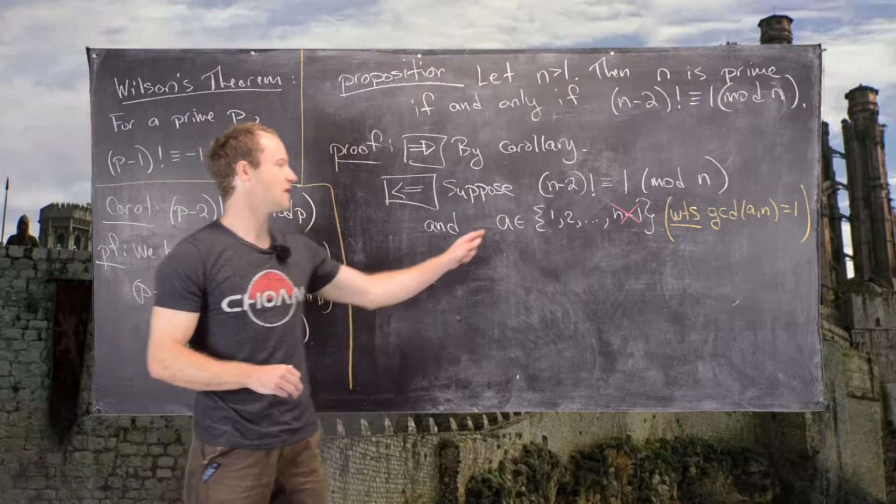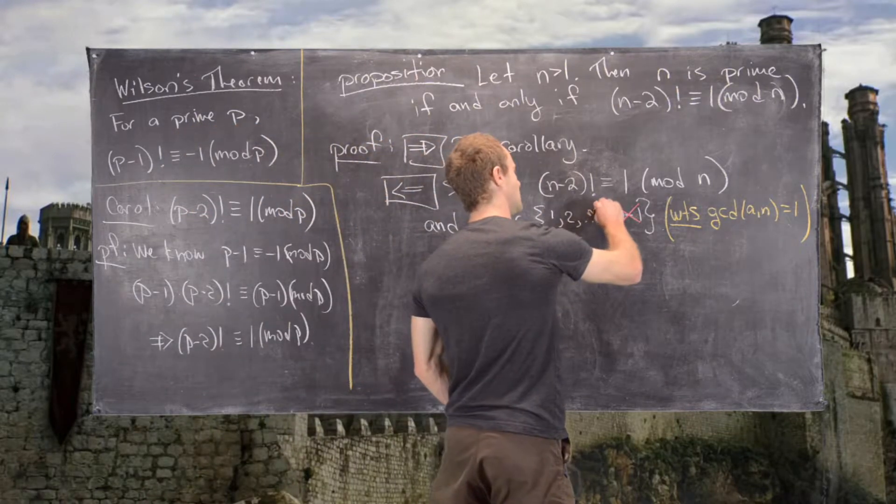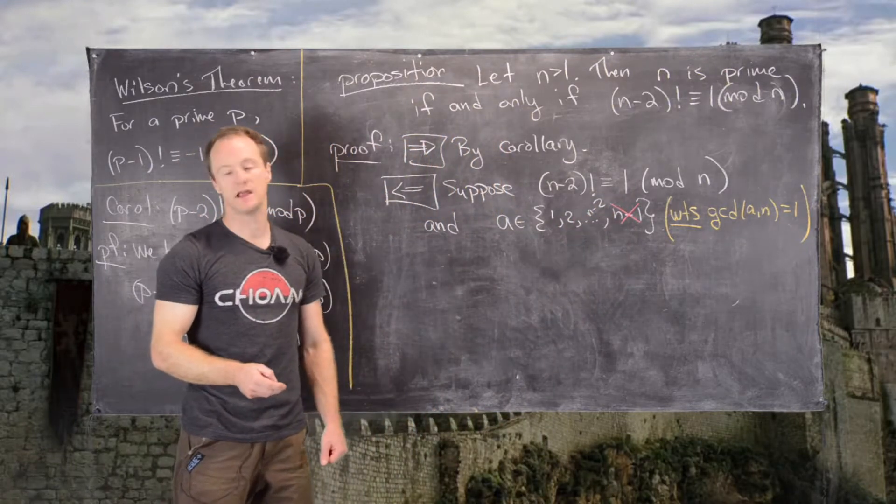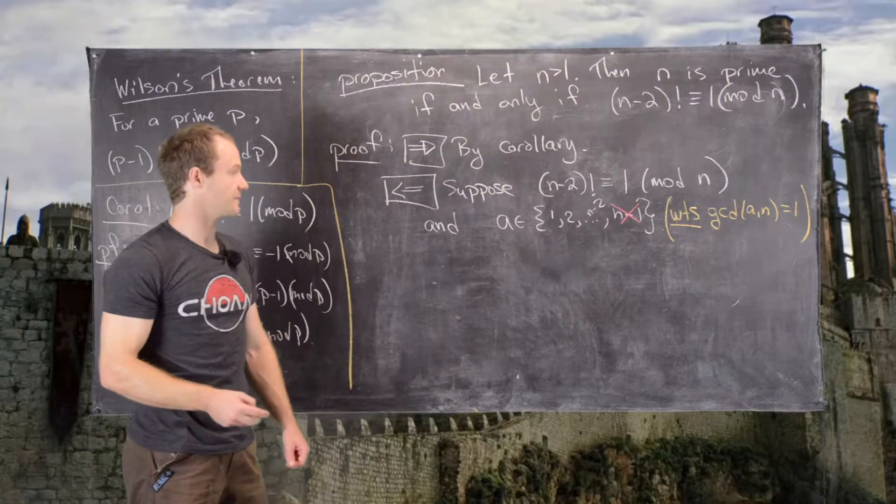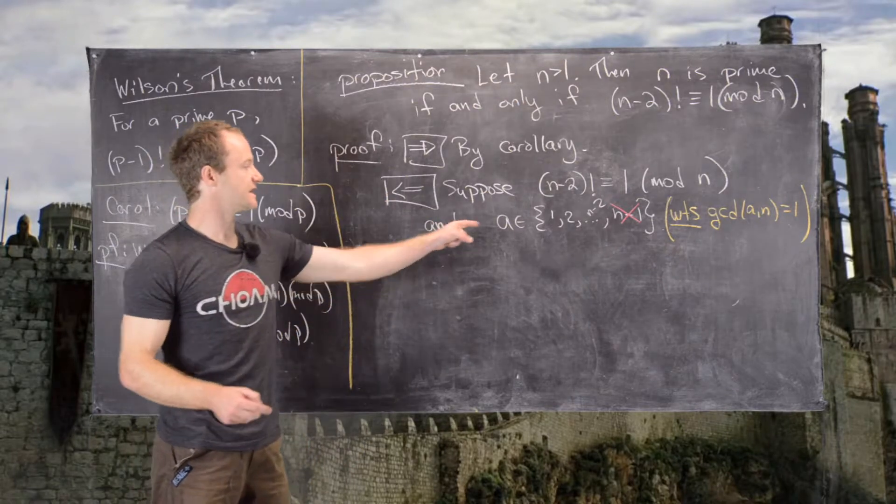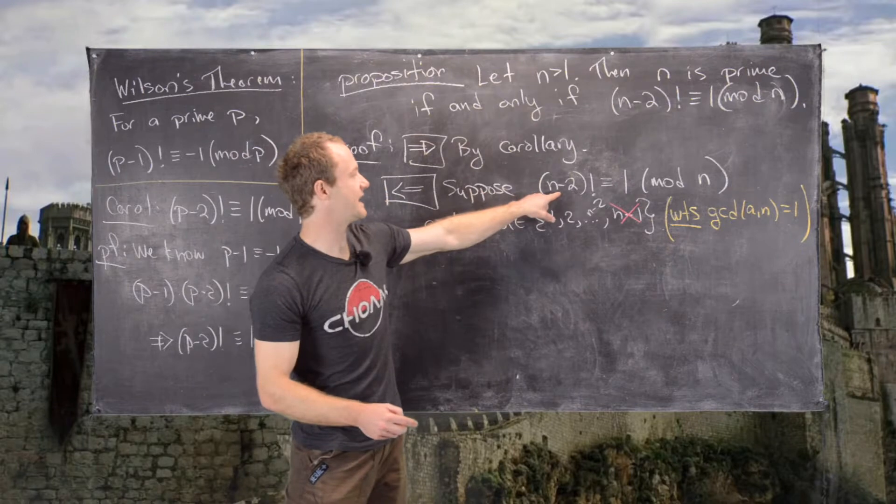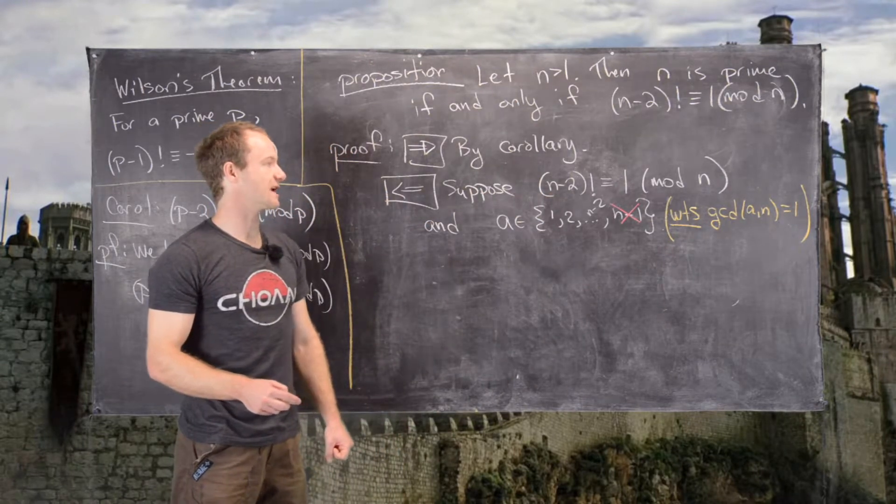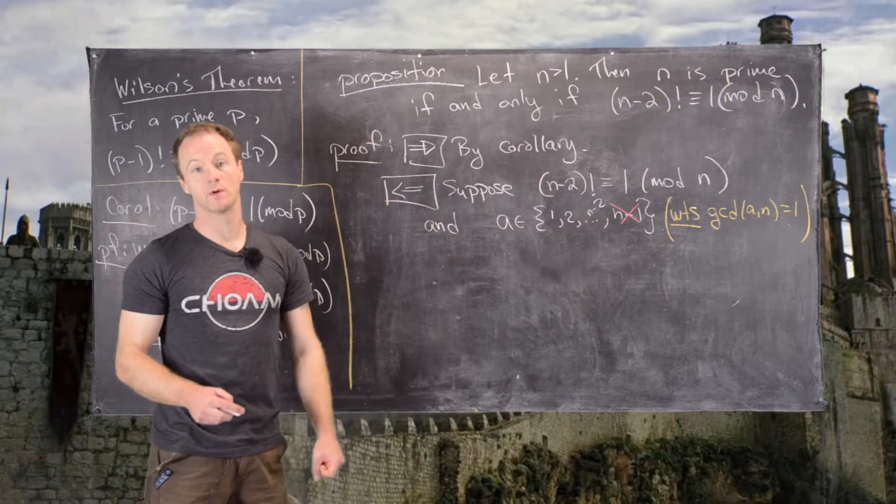Instead, what we'll do is check for all values a between 1 and n-2. Since a is between 1 and n-2, and we're given that this product of all the numbers between 1 and n-2 equals 1, that's what we'll use.